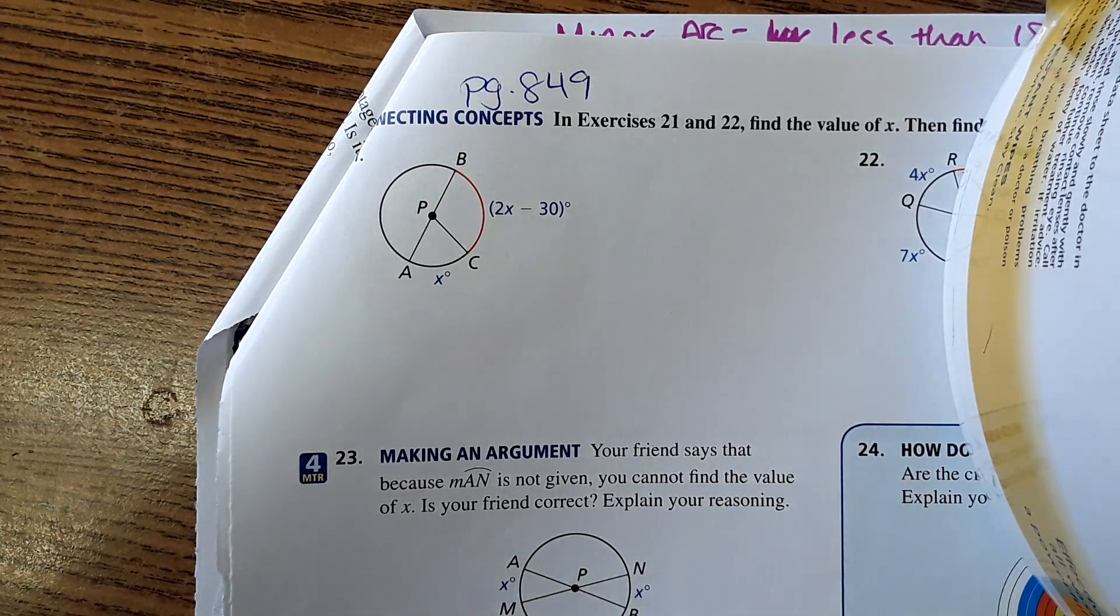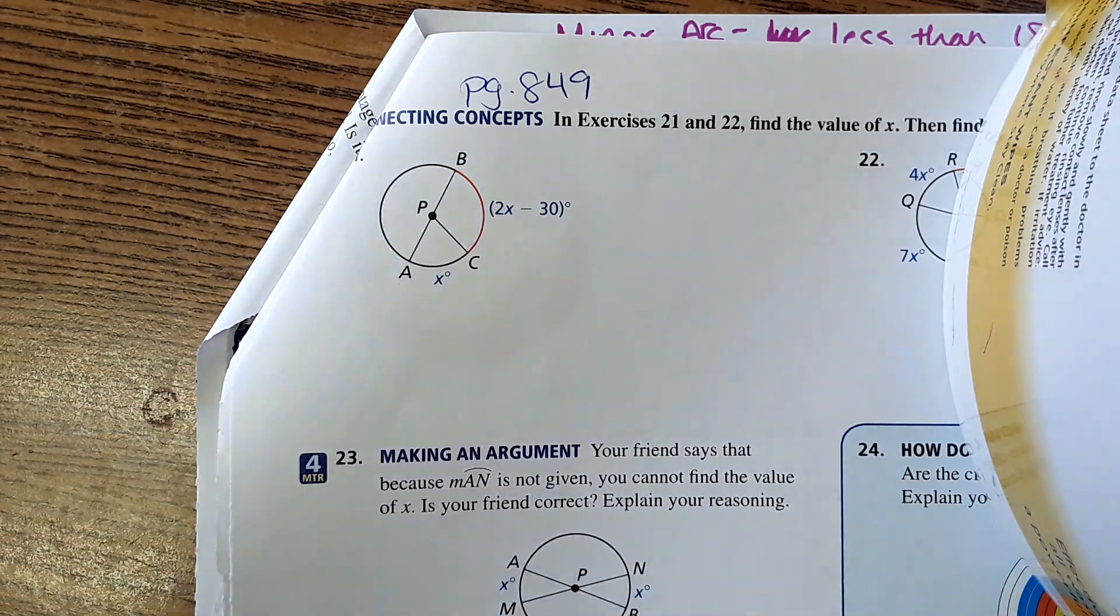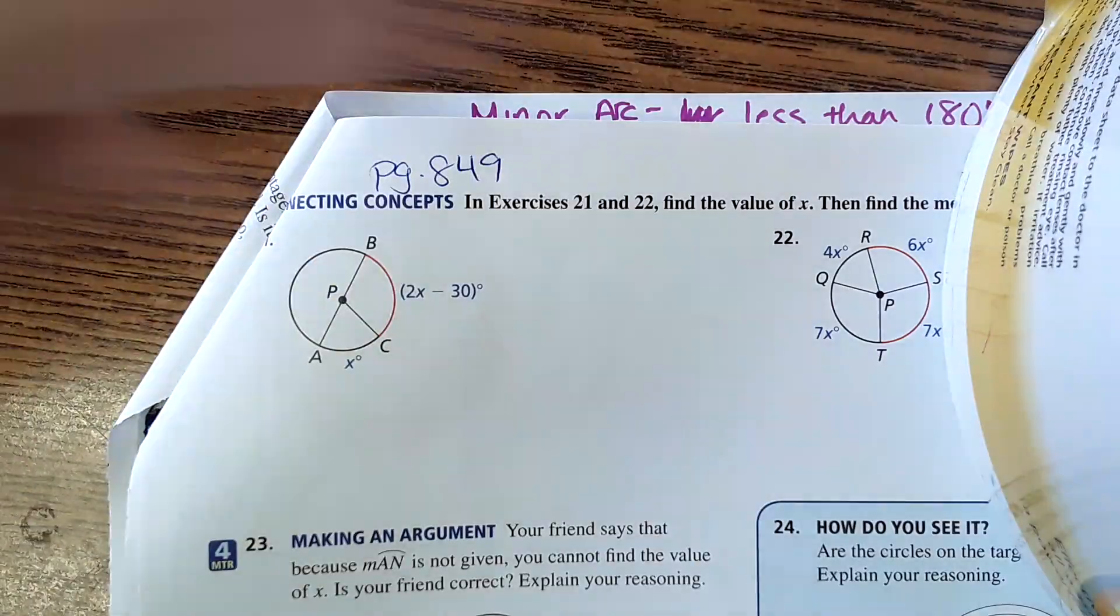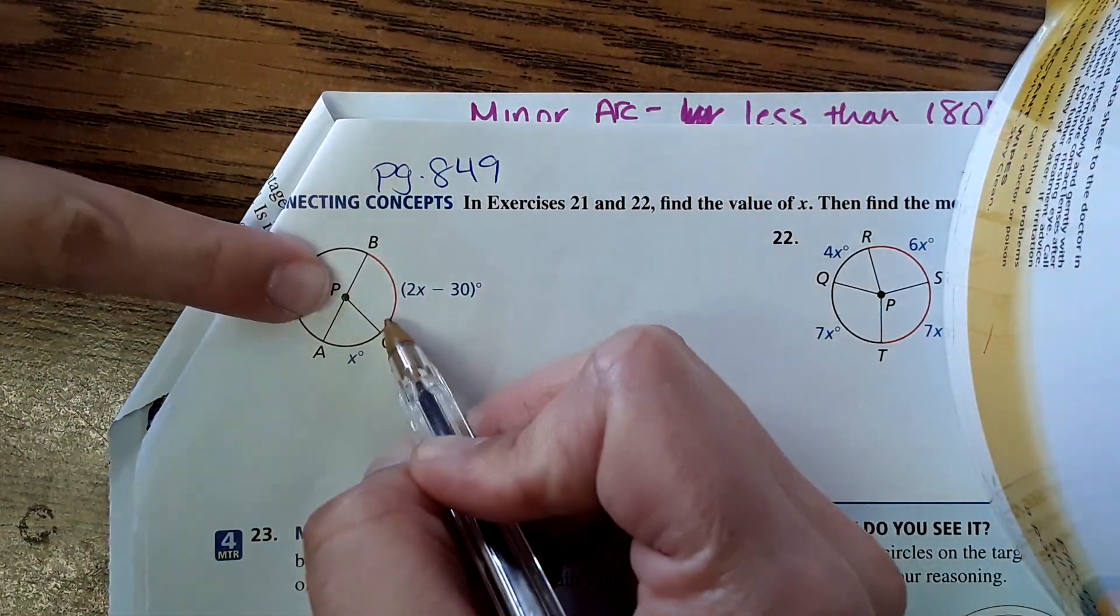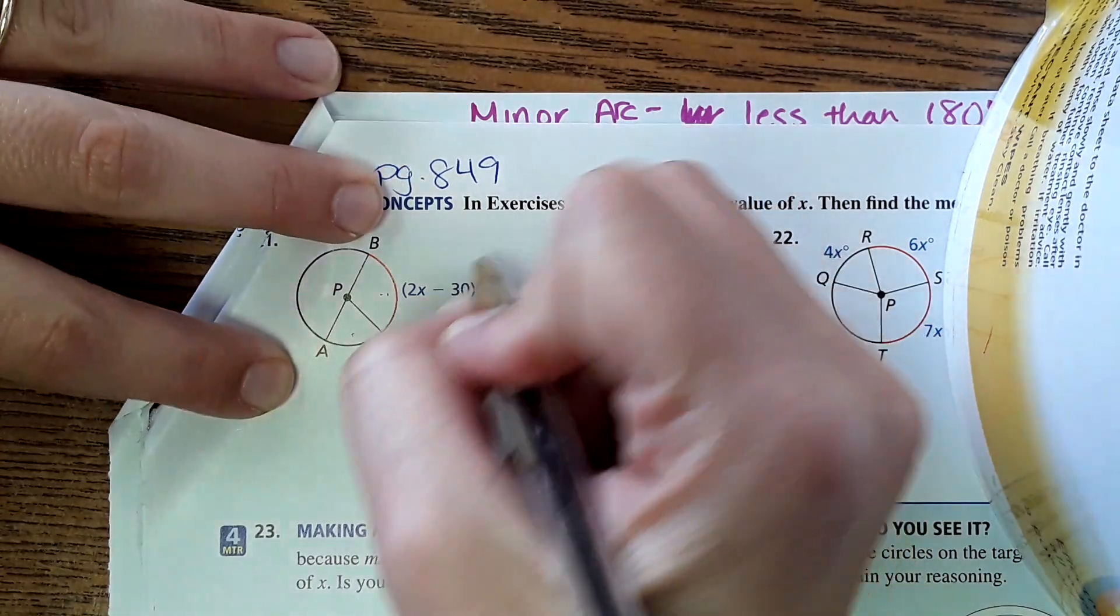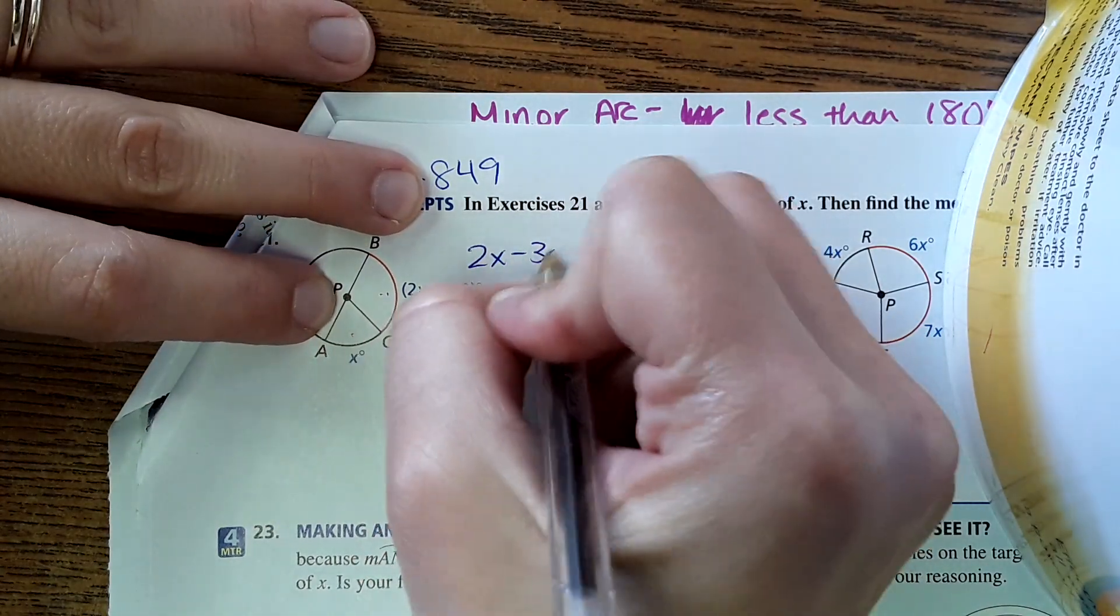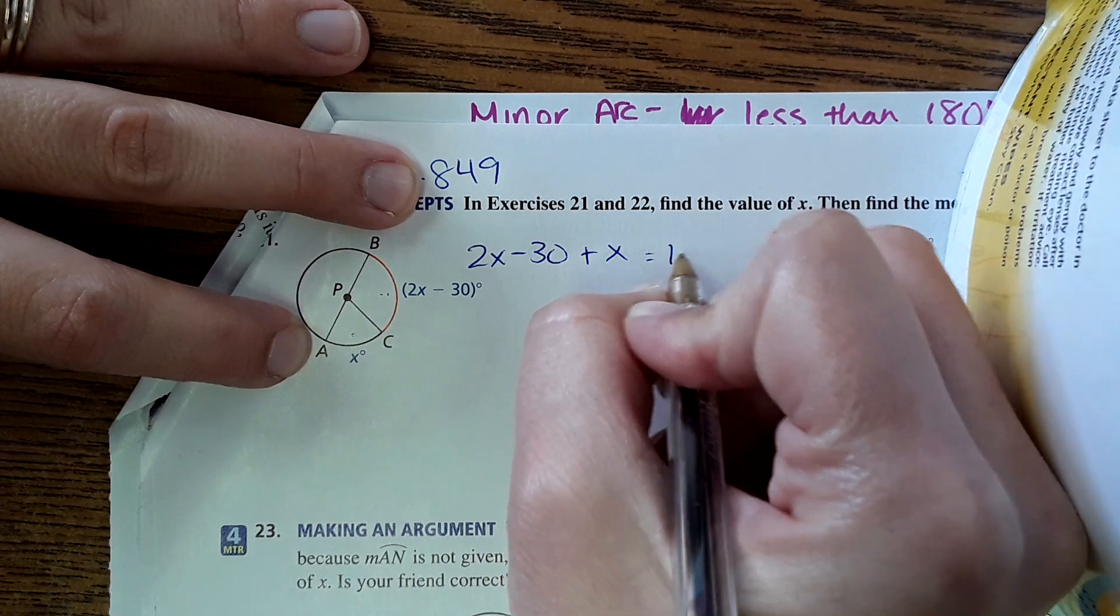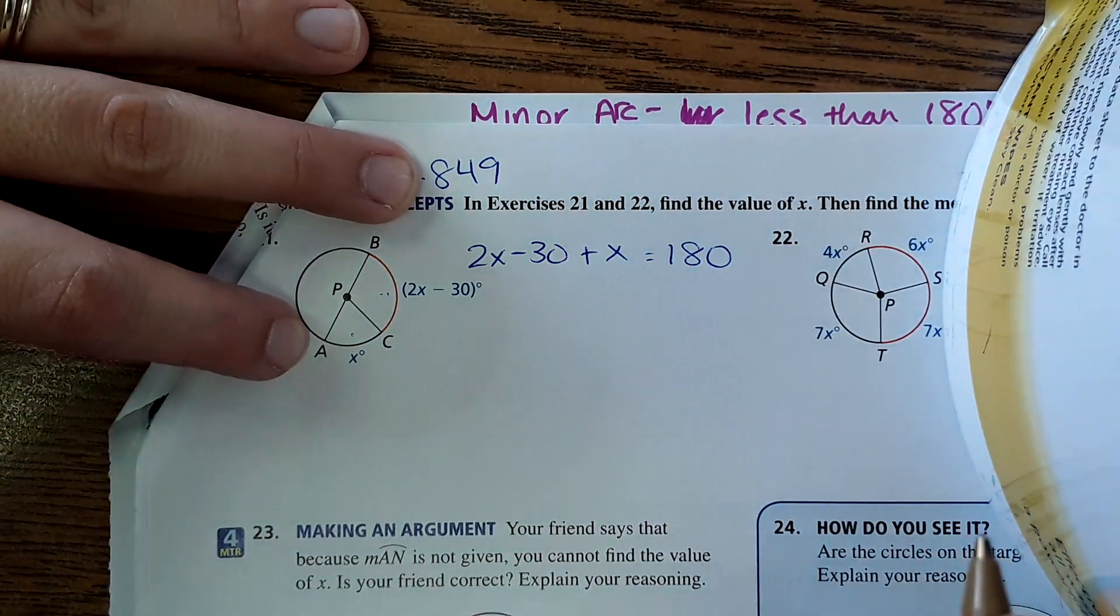Okay, so of course they bring in the algebra, they want to know what is the value of x. So based on what they show us, this is a diameter so these two angles would add up to 180 degrees. So 2x minus 30 plus x equals 180, and we can solve it like this.